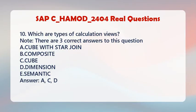Question 10: Which are types of calculation views? Note: There are three correct answers to this question. A. Cube with star join. B. Composite. C. Cube. D. Dimension. E. Semantic. Answer: A, C, D.